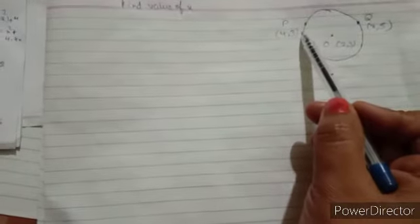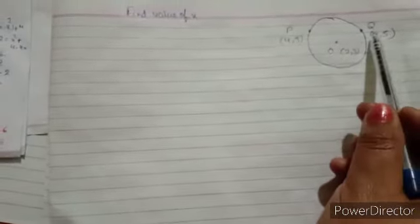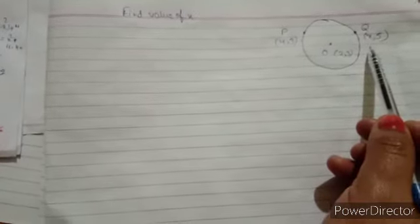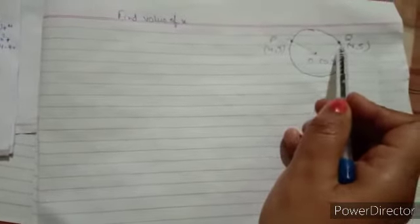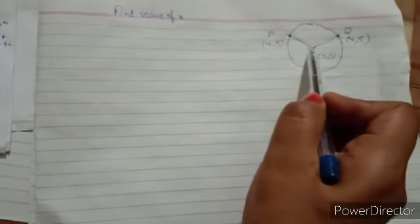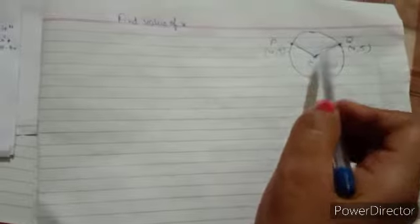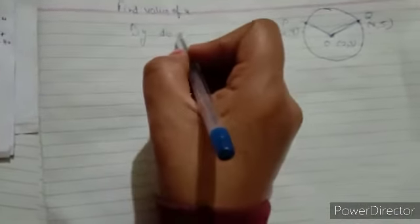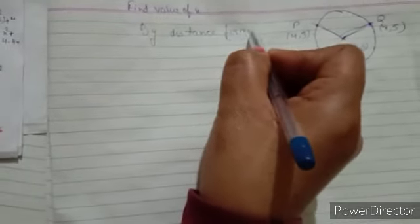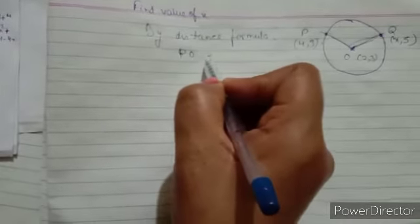Let us start one more question. Points P(4, 3) and Q(x, 5) lie on a circle with centre O at coordinates (2, 3). We have to find the value of x. Since both points lie on the circle, the radius must be equal, meaning the distance PO equals the distance QO. We will use the distance formula: √((x₁−x₂)² + (y₁−y₂)²).